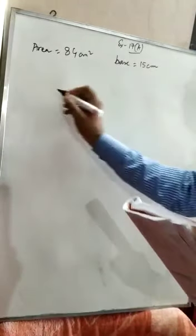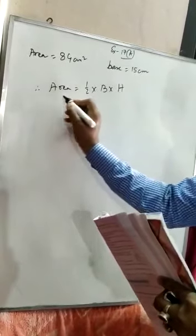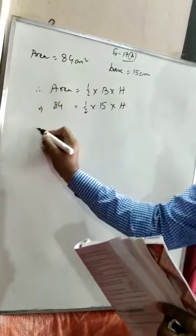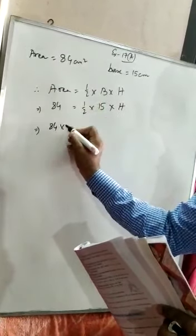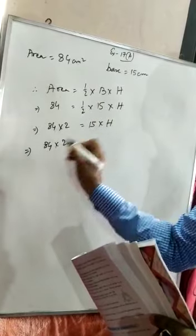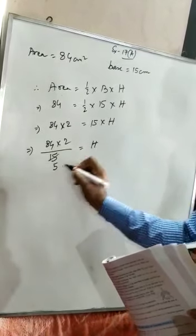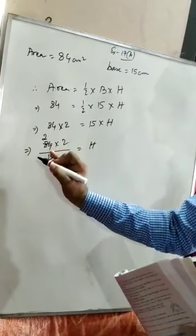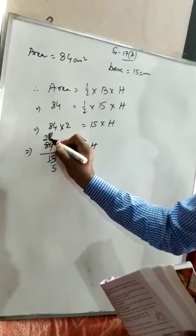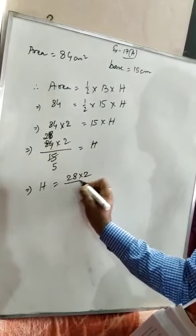Now we are going to find out the height. The formula is area equal to half into base into height. In place of area we use 84 cm square, which we have already found. So 84 equals half into 15 into H. Multiplying both sides by 2, we get 168 equal to 15 into H, therefore H equal to 168 divided by 15. Cancelling by 3, we get H equal to 56 divided by 5.